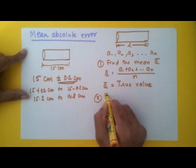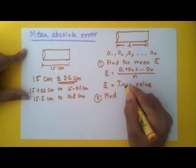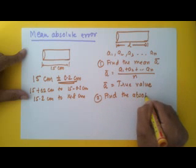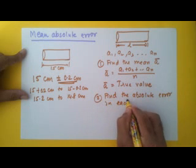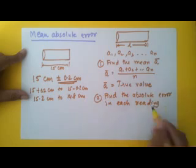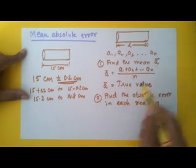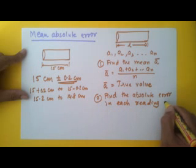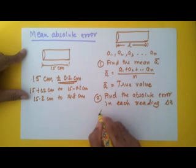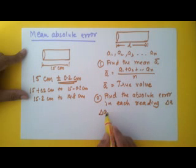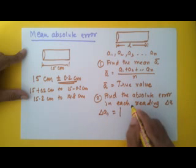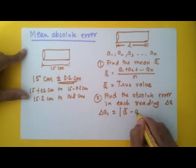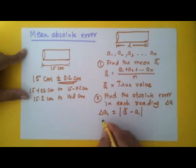The second step I will do is find the absolute error in each reading. I have taken n readings and I want to find out the error in each reading. I will denote the error by delta a. So when I write delta a1, it means the absolute error in the first reading a1. Delta stands for error. So delta a1 is given by the absolute value of a bar minus a1. This will give me delta a1.